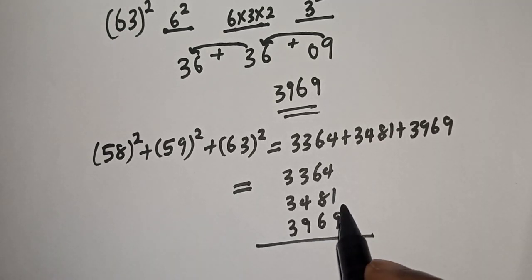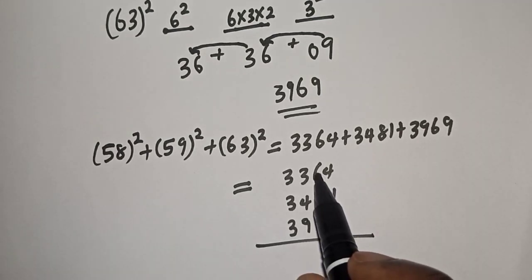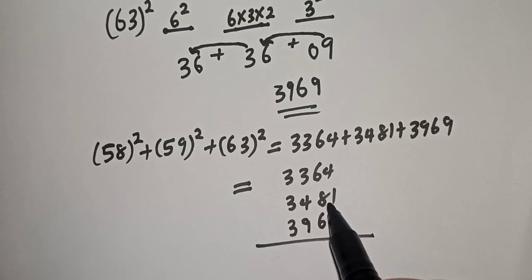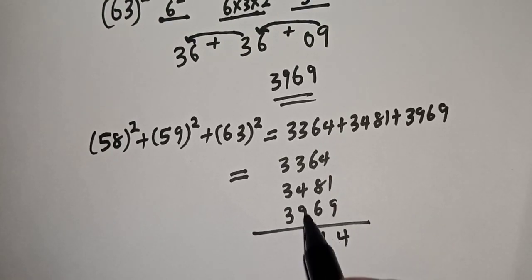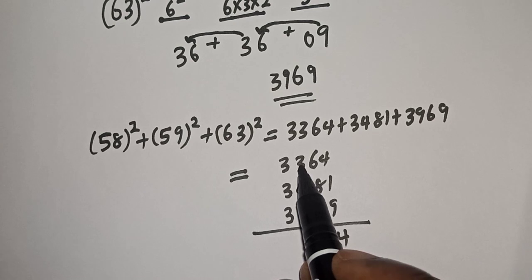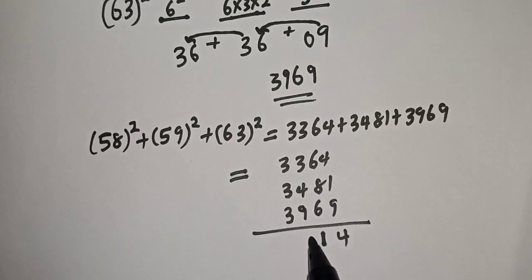We have 9 plus 10, that is 14, 4 remain 1. 6 plus 6 that is 12, plus 8, 20 plus 1 that is 21, 1 remain 2. Then 9 plus 4 that is 13, plus 3, 16, plus 2 that is 18, 8 remain 1. 3 plus 3, 6, plus 3, 9, plus 1 that is 10 814.